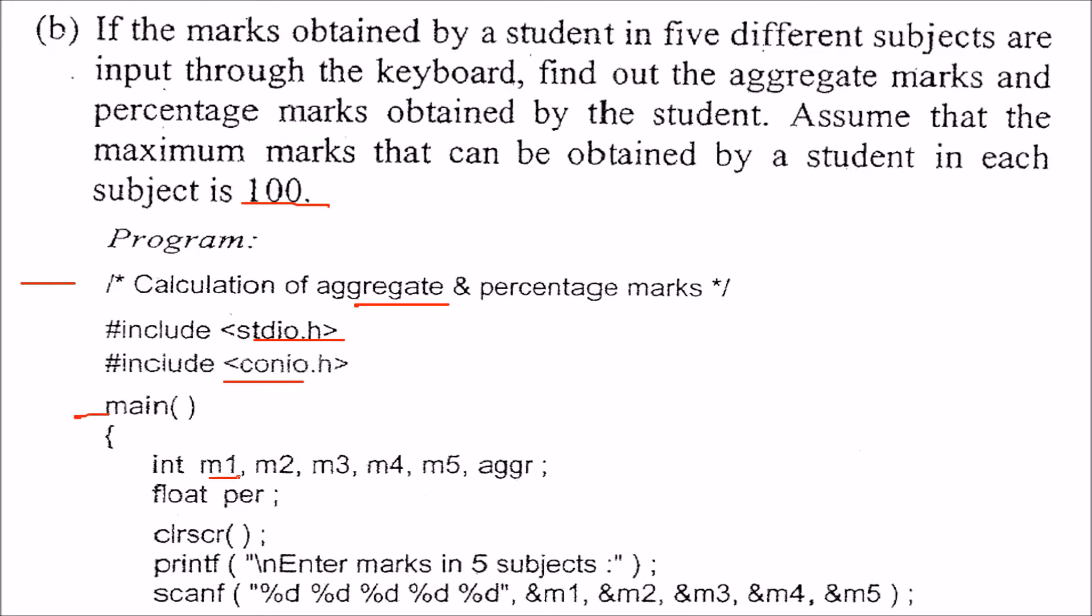Now you take these 5 subject marks: m1, m2, m3, m4, m5. You can take these in float also, no problem with that because the marks can come like 73.6 also. But we are assuming that the number will not come in decimal here. So these 5 and along with this aggr aggregate, this will also come in integer. Then we have float, that is the percentage. Percentage will be computed and this will be in float or decimal value.